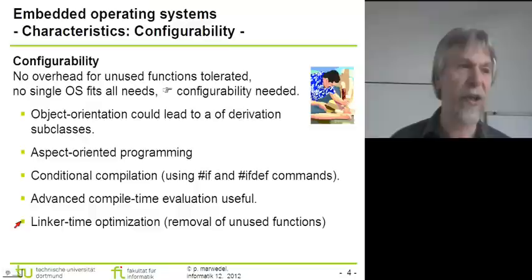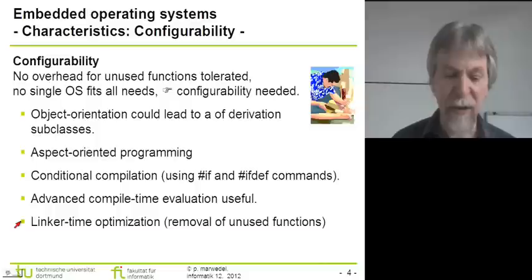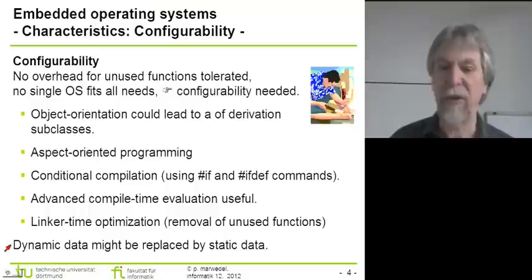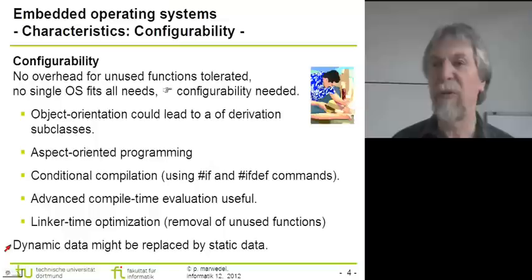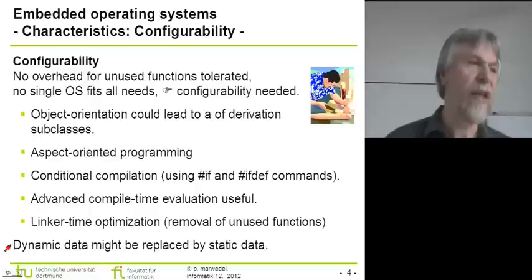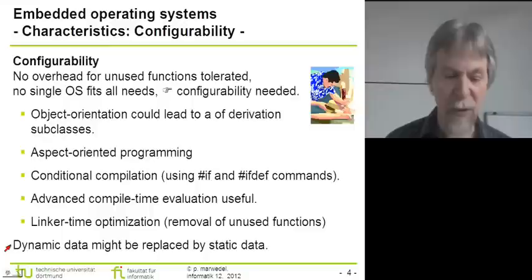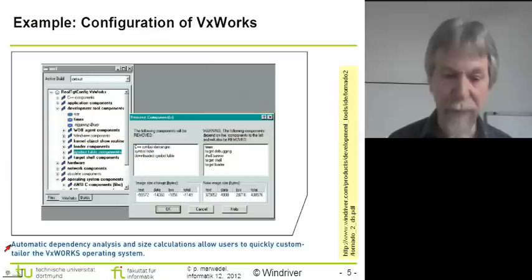Proceeding further down the software generation toolchain, we can use a smart linker that omits functions that are not needed. Only the linker is really sure which functions are needed, so it can safely omit some. In many cases, we also have the opportunity to replace dynamic data with static data. For example, if we know there is a fixed number of processes or threads, we can use static arrays instead of linked lists, contributing to overall efficiency.